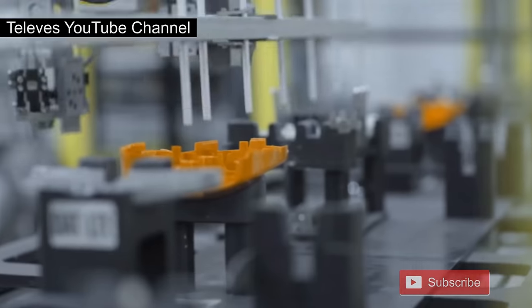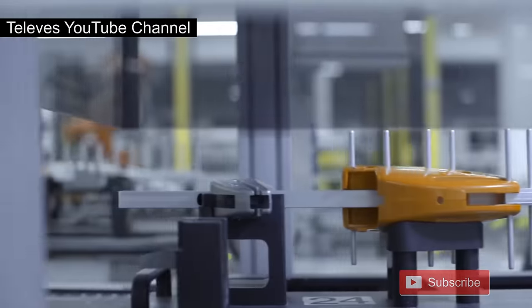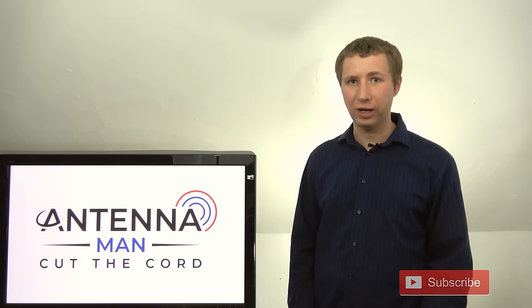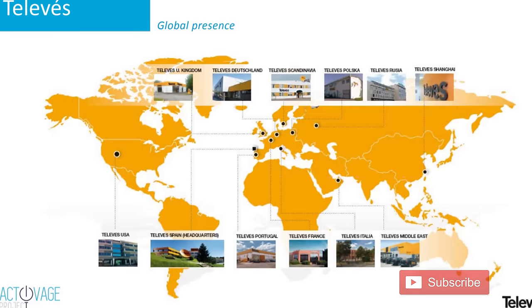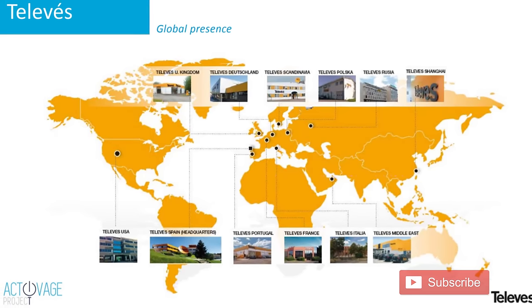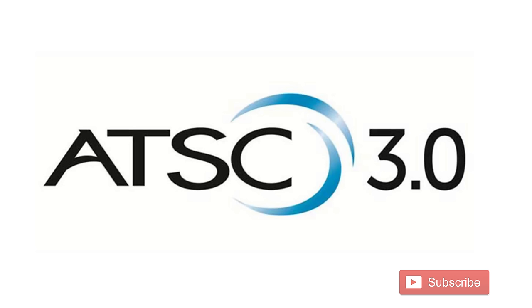The company is vertically integrated, meaning that they handle the design, testing, manufacturing, quality control, and distribution of the antennas without having to rely on an outside source. In addition to Televes being one of the largest antenna companies in the world, they're also involved in the manufacturing of television transmitters and the launch of ATSC 3.0.